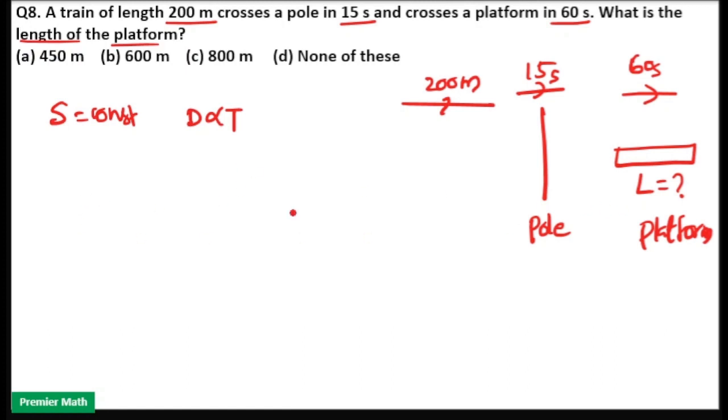So if you take the distance ratio, in the first case when train passing the pole, distance is train length plus pole distance is equal to 0. So 200.